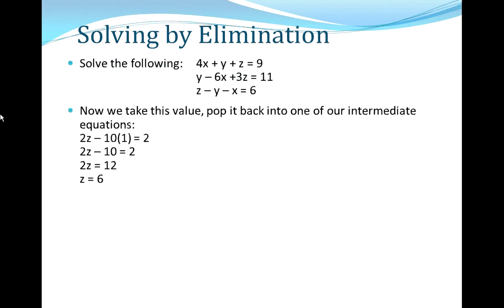So our last step here is to take this value, x equals 1, and put it back into one of our intermediate equations. Those are the two equations we found on the last slide in x and z. So we took one of the equations here, 2z minus 10x equals 2, and we're plugging our value x equals 1 back into it in order to find z. So that's what I've done here, doing the algebra down the line, resulting in z equals 6. So now we have two values: x equals 1 and z equals 6.